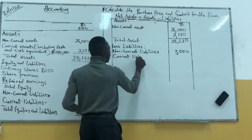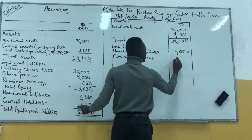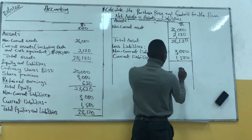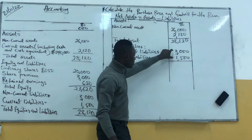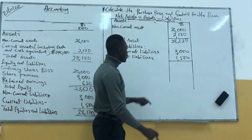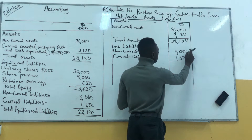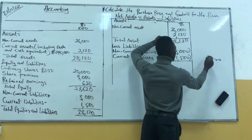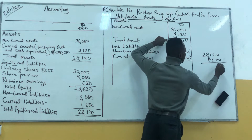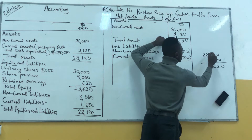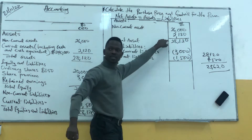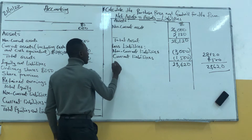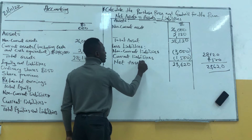Current liabilities divided by 1,500. So from here, all of this is taken away. You have to sum the liabilities together. So we have total liabilities, and from $28,120 minus the liabilities of $4,500 — we get $23,620. Is it clear? So we have $23,620 as our net assets.